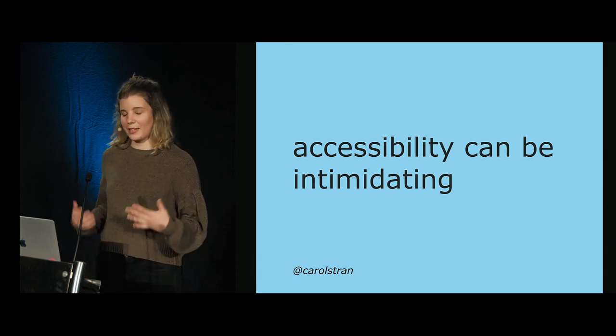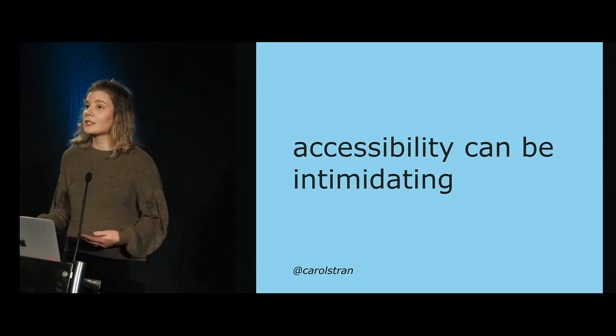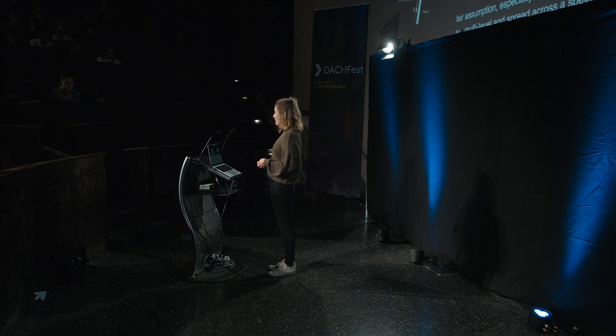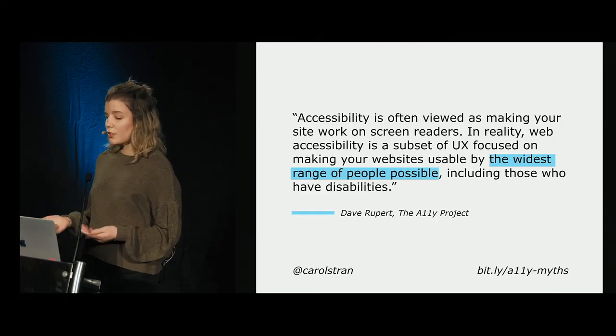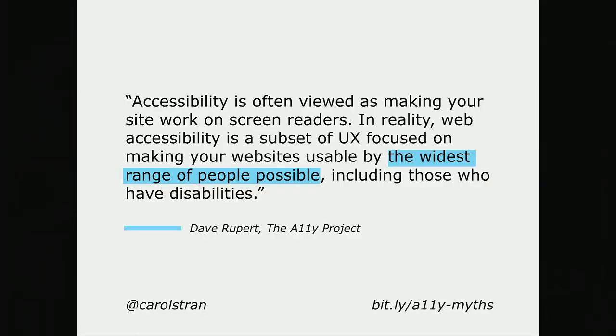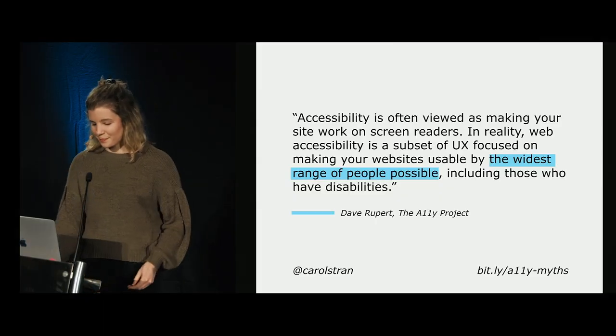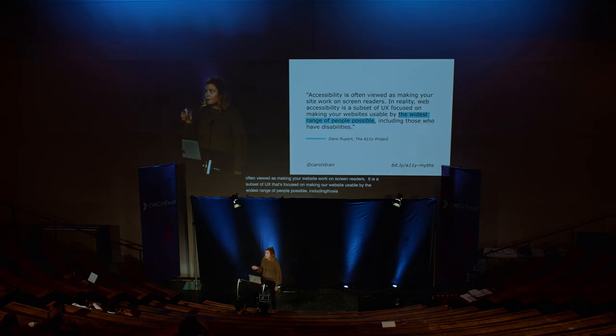Starting off can be really intimidating, because it feels like there are just so many considerations to make a fully accessible website. There are also many misconceptions. Dave Rupert addresses one of the most common myths: accessibility is often viewed as just making your website work on screen readers. But in reality, web accessibility is a subset of UX focused on making websites usable by the widest range of people possible, including those who have disabilities. Dave breaks accessibility down into four different categories.